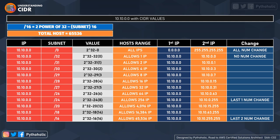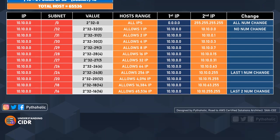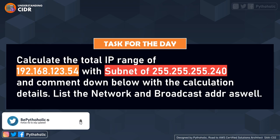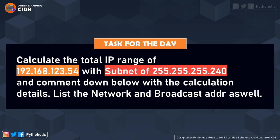There are plenty of sites that can help you get this data as well. For today's practice task: calculate the total IP range of 192.168.123.54 with subnet 255.255.255.240. Comment below with your calculation details — don't copy from others. Calculate how many IPs you get, what is the network address, what is the broadcast IP, and everything else. I'll heart every right answer.